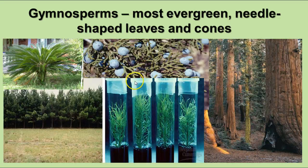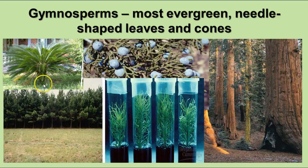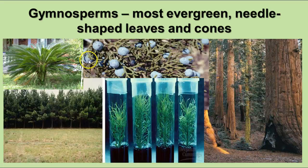Gymnosperms are mostly evergreen, have needle-shaped leaves, and usually produce cones — although junipers produce little berry-like cones. The most common kind are the conifers. We also have cycads, like the sago palm, which belongs to the gymnosperms. There's also a group called the ginkgos, which have a fan-shaped leaf rather than a needle-shaped leaf. And then there's another group called the gnetophytes, which are totally different. Ginkgos are native only to China, though planted elsewhere. Cycads are very ancient plants, definitely gymnosperms, and they produce a very large cone — about 10 to 12 inches in length.